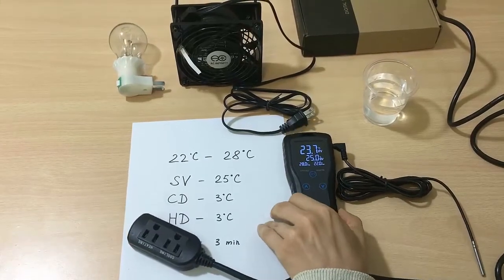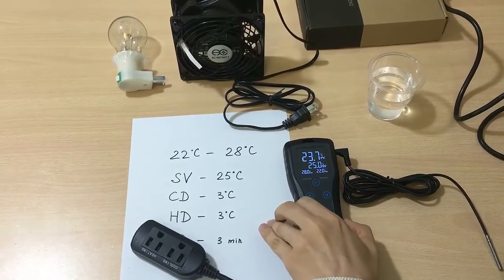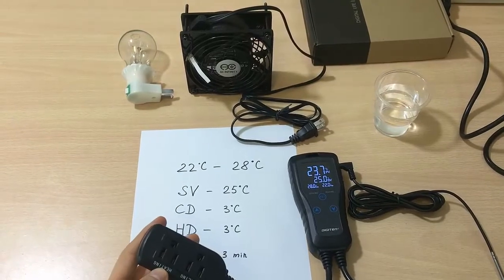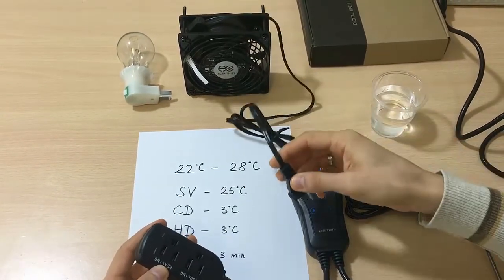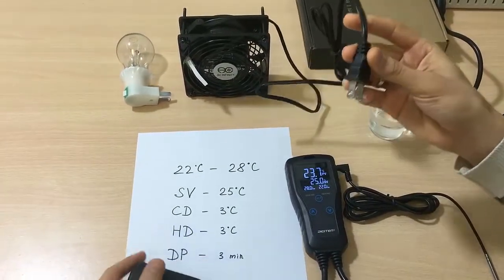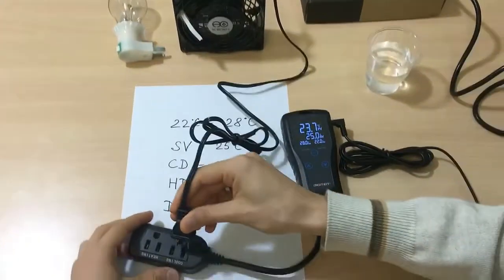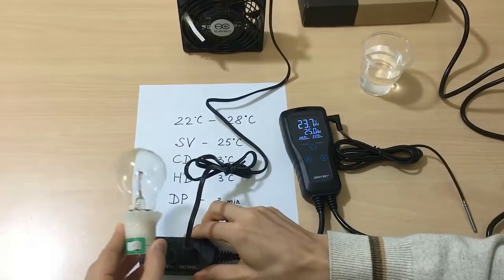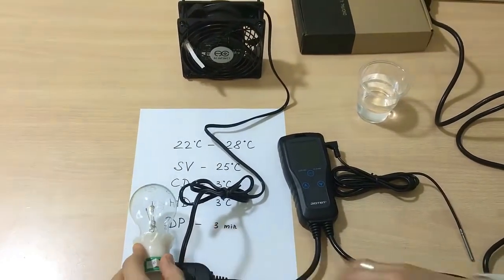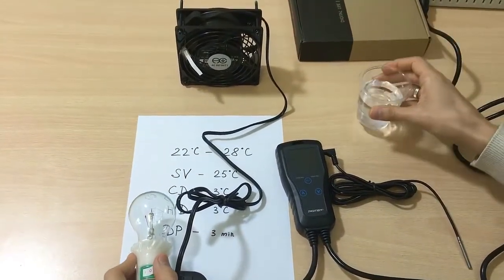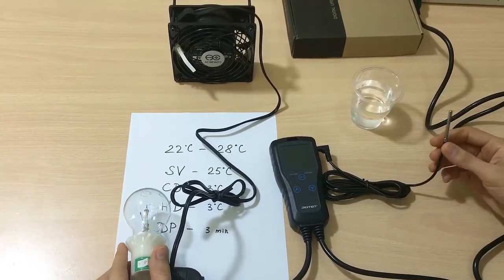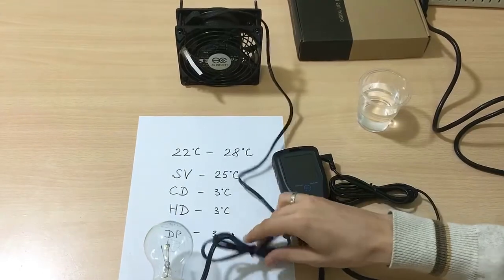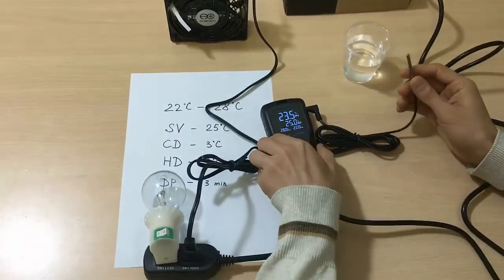So now we have finished setting all the parameters. Now we can start using our thermostat. So here we have the output to which we can connect. As an example, we are using a fan as an example of cooling and we are using a lamp as an example of heating. We also have cold water here to see the cold effect. So now let's begin checking.